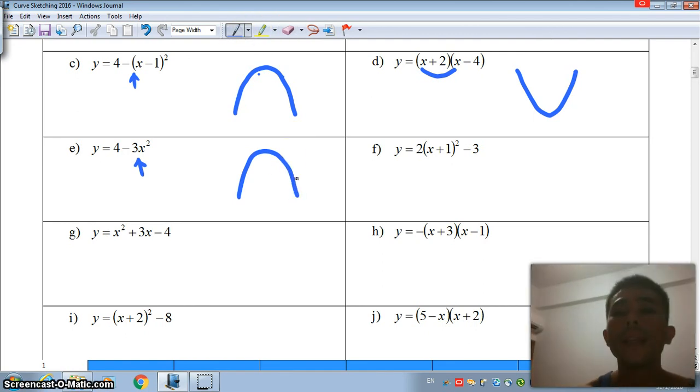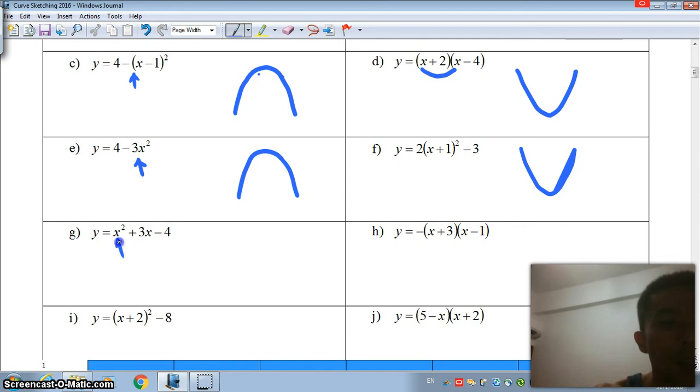Next, this is a x-plus-1-square. Multiply by a 2, you will have a 2x-square. U-shape. This is obvious enough. U-shape.